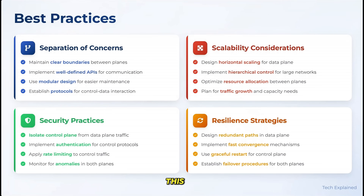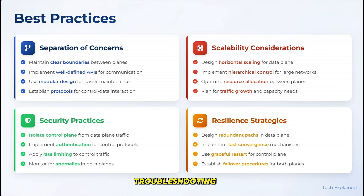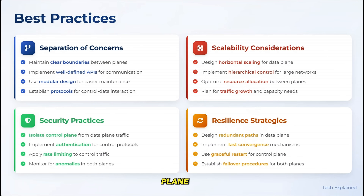Design your network with this in mind. Security is critical for both planes, but in different ways. The control plane needs to be protected from unauthorized access that could allow attackers to manipulate routing decisions. The data plane needs security mechanisms to prevent malicious traffic from impacting network performance. For monitoring and troubleshooting, you'll need different approaches for each plane — control plane issues often involve routing protocols or configuration errors, while data plane problems might involve hardware failures or congestion.